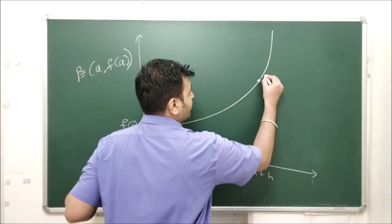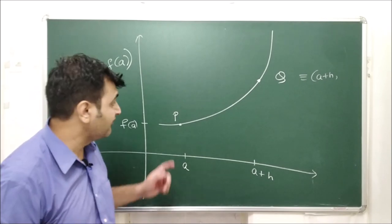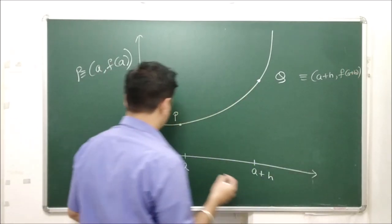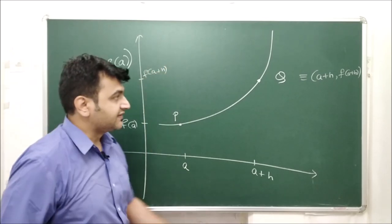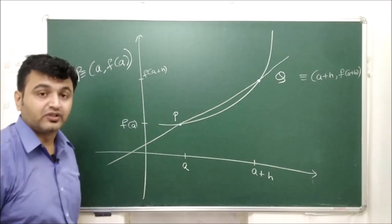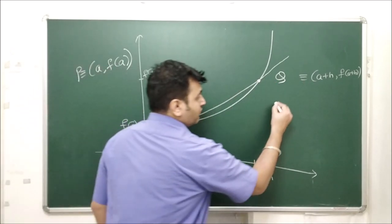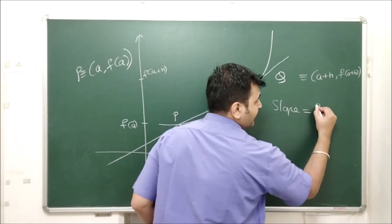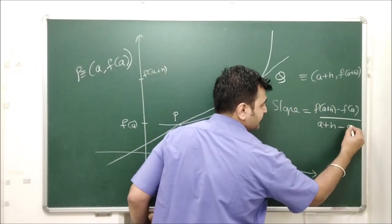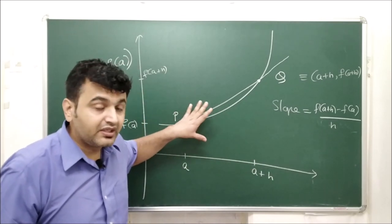Let me call the second point Q. The Q point has coordinates (a+h, f(a+h)). So f(a) is the y-value at P and f(a+h) is the y-value at Q. Now if you draw the line joining P and Q, the slope of that line is (y2 - y1)/(x2 - x1) = [f(a+h) - f(a)] / [(a+h) - a], which simplifies to [f(a+h) - f(a)] / h.